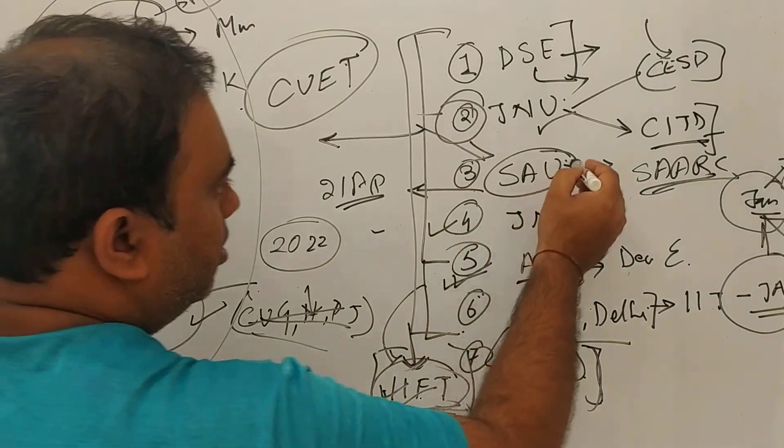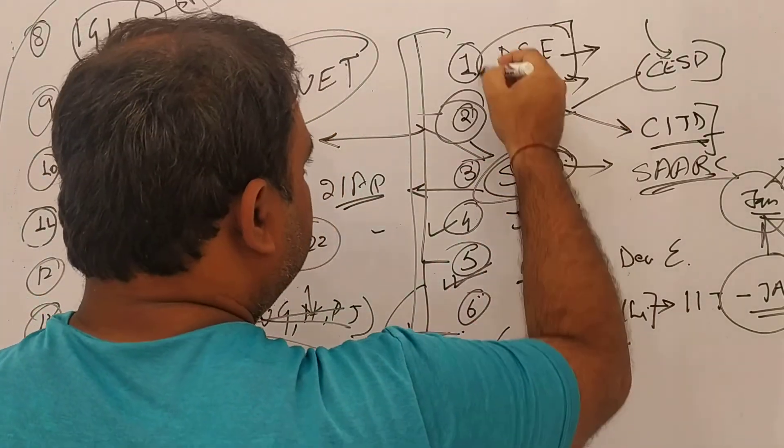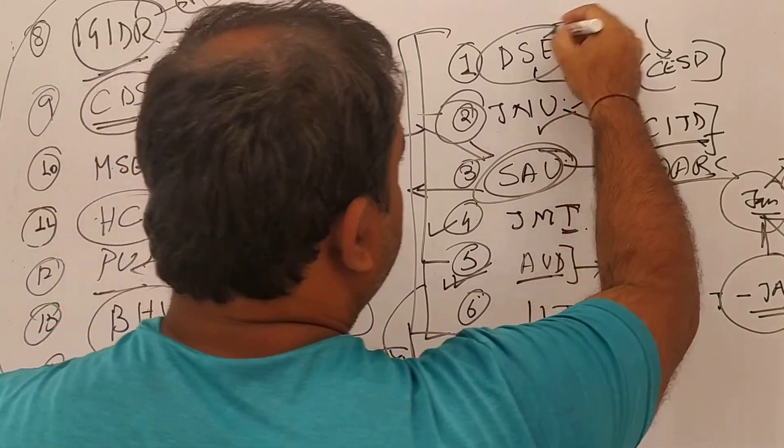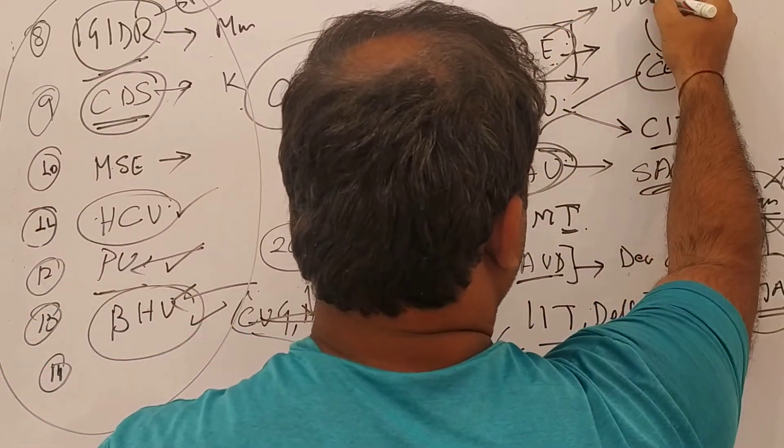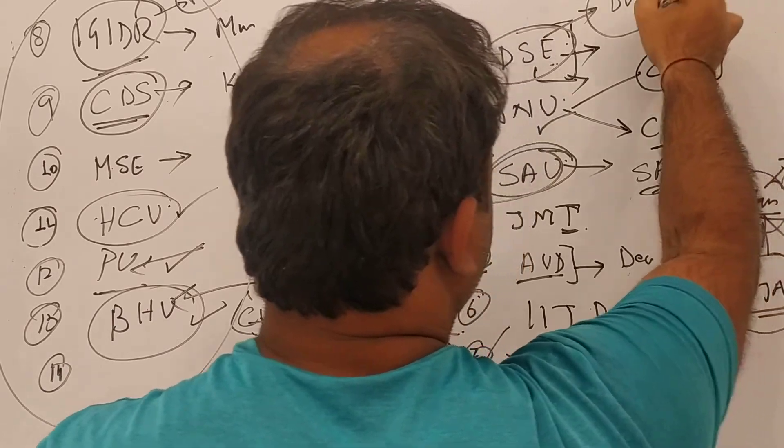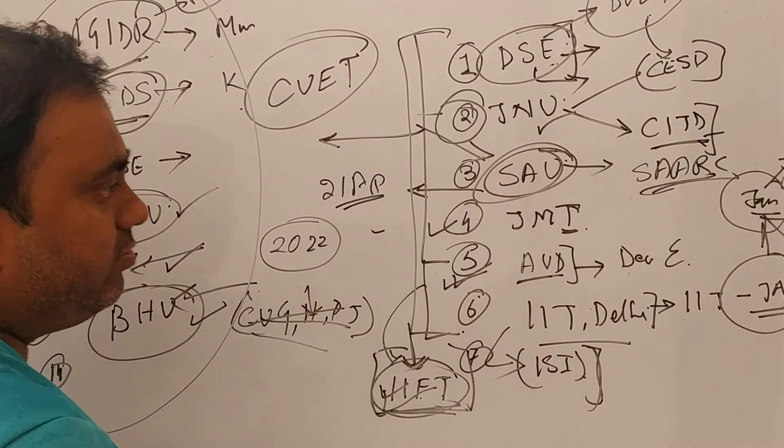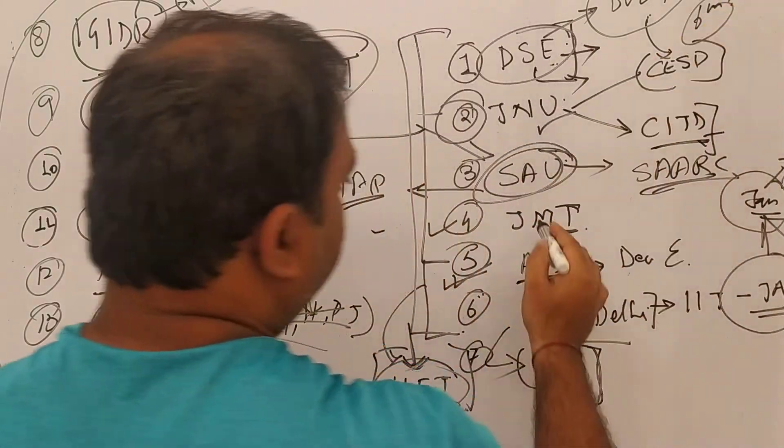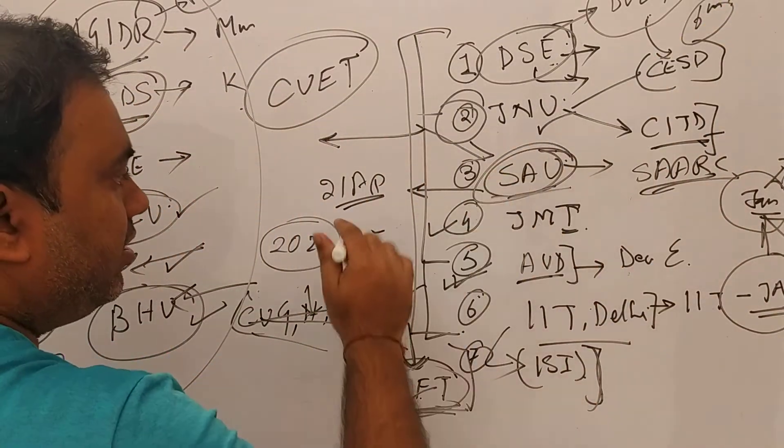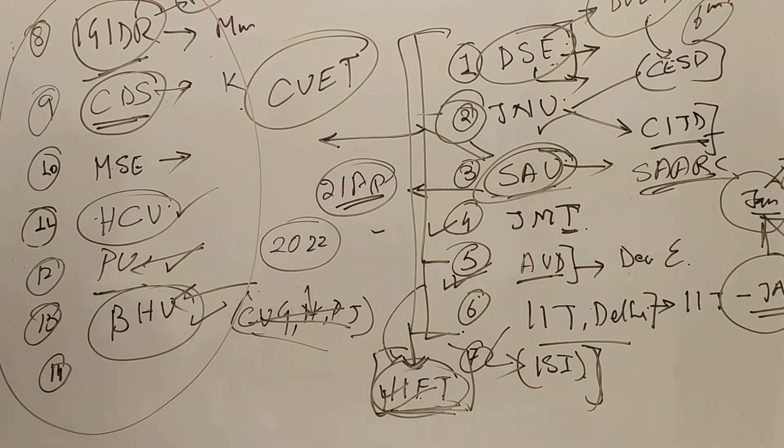The form for SAO has been released, form for Delhi School of Economics has been released. Admission to DSE is through DUET, Delhi University entrance test, the form has been released from 6th of April, so you should go and apply. For SAO, the last date is 21st of April, so you should go and apply.